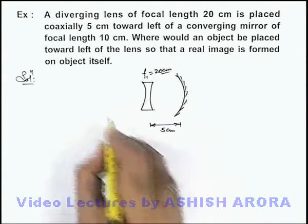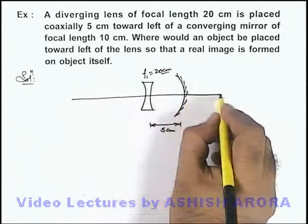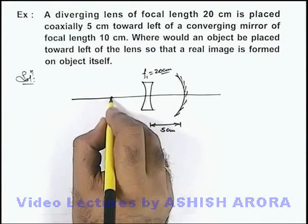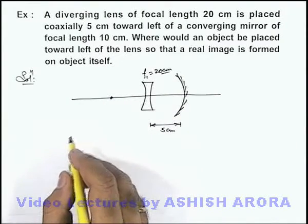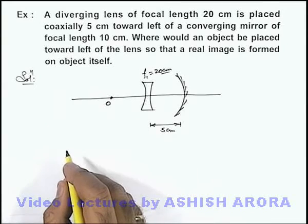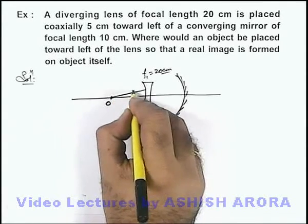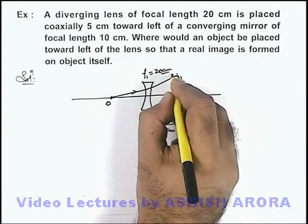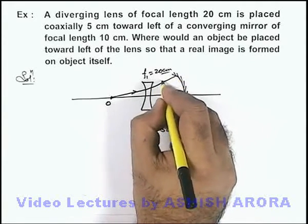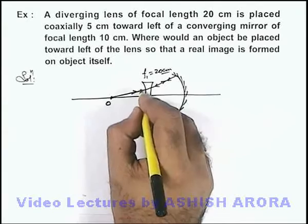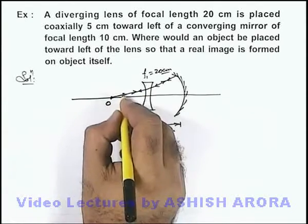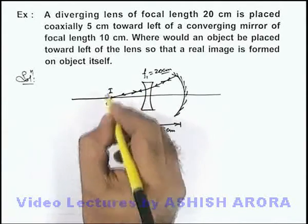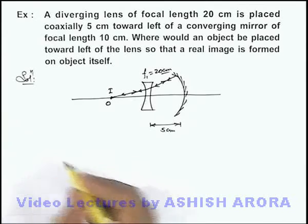Now in this situation we are required to find the position of the object on the left side of the lens so that when light rays are incident onto it, after refraction these are diverged in such a way that these light rays must retrace their path. Then only it is possible that finally the image will be produced on the object itself.